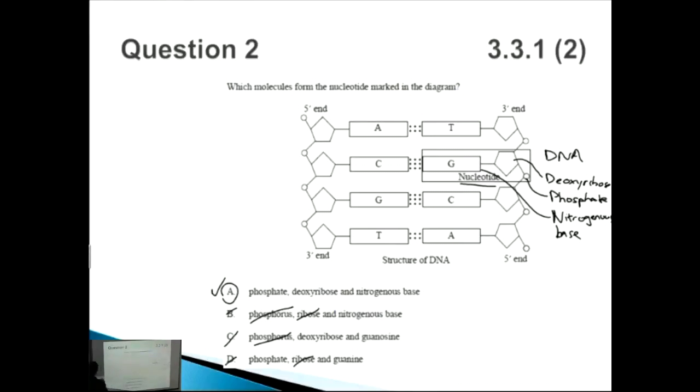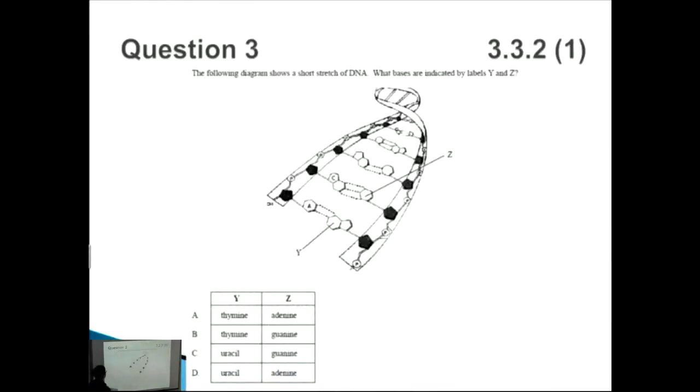Next question. The following diagram shows a short stretch of DNA. So if you've got the double helix structure which confirms that it's DNA, what bases are indicated by labels Y and Z? Very easy question as long as you know what the way that the bases bond.